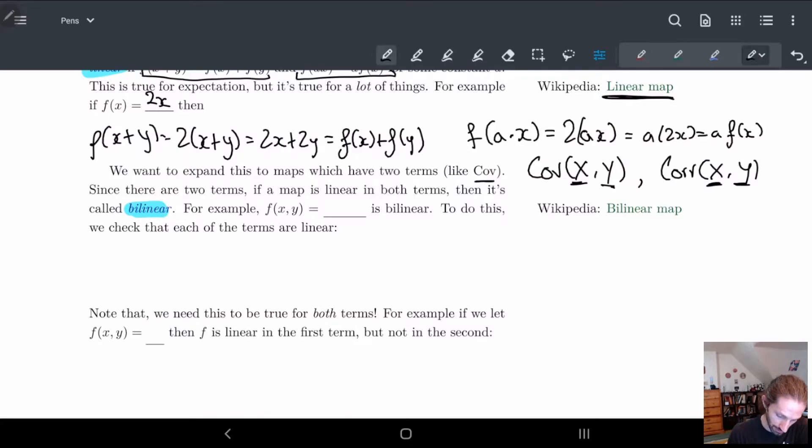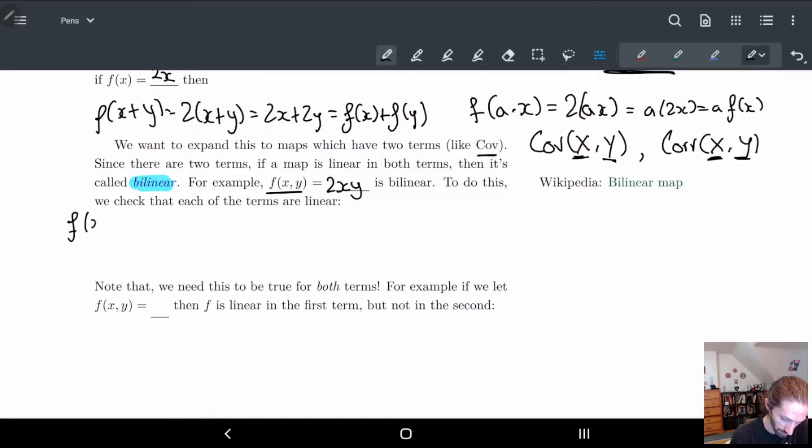And it turns out for some things yes for other things no. So let's look at an example. For example if I take f of x y so I have two variables and I look at 2xy. So to do this we need to check all the variables. So let's do f of I guess we'll need x plus z of y. So this is 2 times x plus z y this is equal to 2xy plus 2zy which is equal to f of x y plus f of z y. So yes we are able to take this plus and flip it into a plus outside. So we can take the plus out.